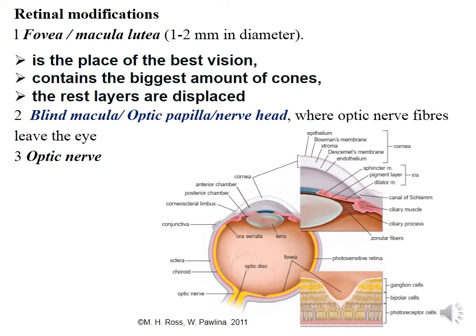Regarding retinal specializations, there are two main parts to know: the macula lutea and the blind spot (optic papilla or nerve head). The macula lutea is the place of best vision; it contains the highest density of cones and the other layers are displaced. The blind spot is the place where optic nerve fibers leave the eye, and the optic nerve can be seen here.